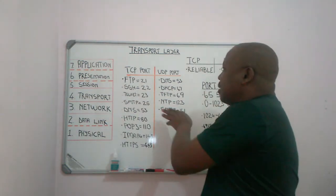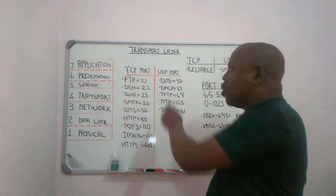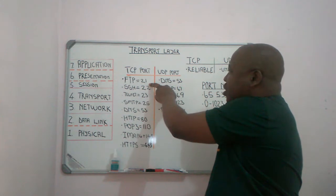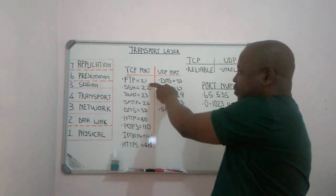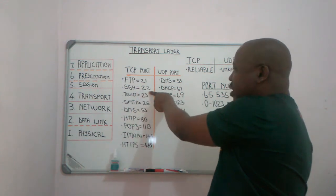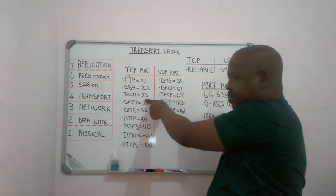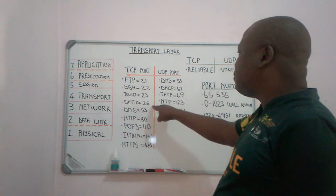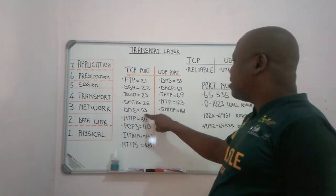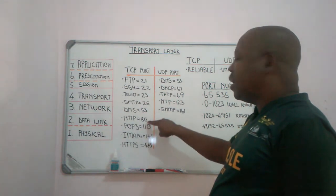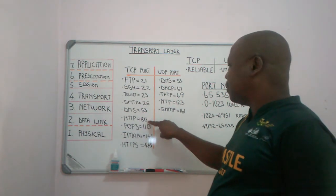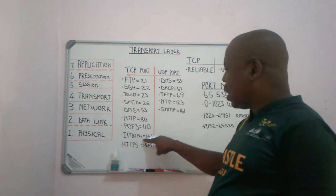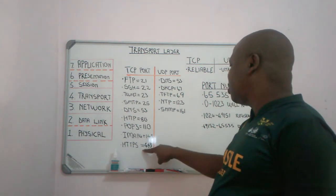Here are some of the well-known ports for TCP: FTP uses port 20 and port 21, SSH uses port 22, Telnet uses port 23, SMTP uses port 25, DNS uses port 53, HTTP uses port 80, POP3 uses port 110, and HTTPS uses port 443.